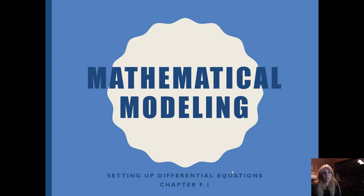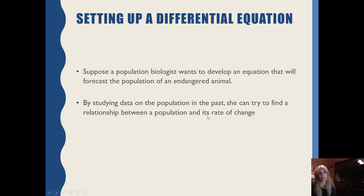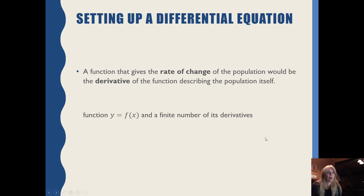Let's look at mathematical modeling, basically just modeling with differential equations, which are just derivatives. Suppose a biologist wants to develop an equation that will forecast the population of an endangered animal. By studying data on the population in the past, she can try to find a relationship between a population and its rate of change. A function that gives the rate of change of the population would be the actual derivative of the function describing the population itself. So if we have the derivative, we can find the anti-derivative and then find the total number in the population.